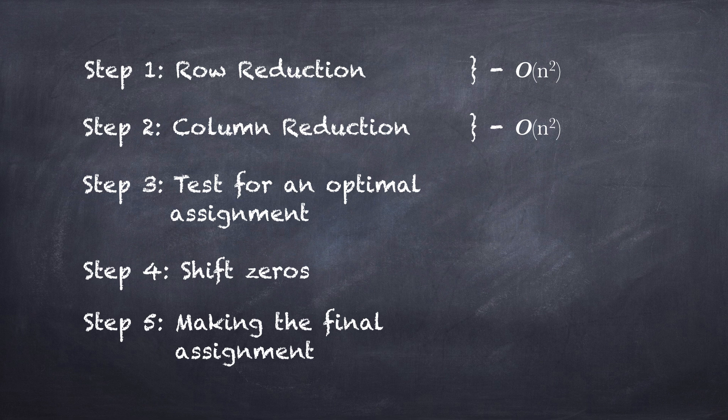Step 3 covers the zeros with lines. It can do this by visiting each zero, of which there are at most n-squared, and covering it if not already covered. Step 4 scans and adjusts at most O of n-squared values, thus both steps 3 and 4 are O of n-squared.